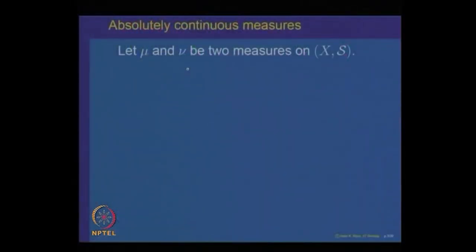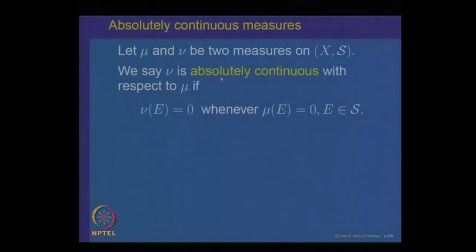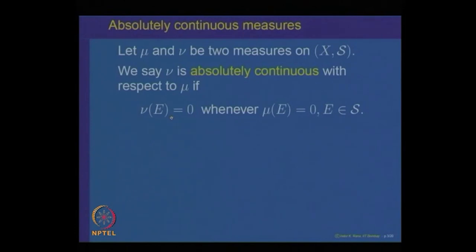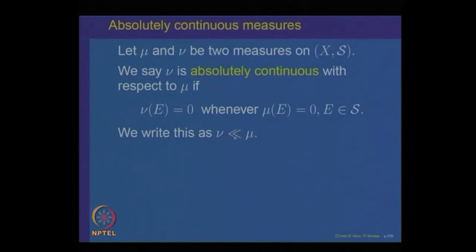Let us start recalling what absolutely continuous measures are. If two measures mu and nu are given on a measurable space (X, S), we say nu is absolutely continuous with respect to the measure mu if for any set E in the sigma algebra S, mu of E equal to 0 implies nu of E equal to 0. In that case, we write this relation by the symbol nu << mu.